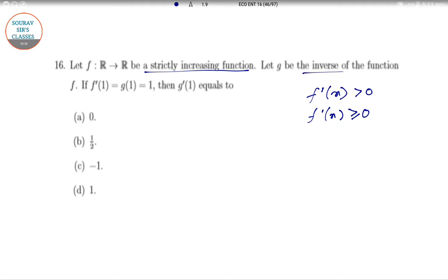Let g be the inverse of the function f. So g equal to f inverse, and f dash 1 equal to, g of 1 equal to 1. So the first order derivative of g at 1. Here f of x equal to, let f of x equal to x, which is an increasing function because f dash x equal to 1.